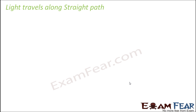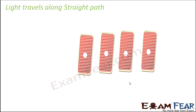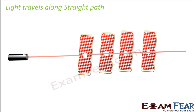We will perform another experiment to clearly demonstrate that light travels in a straight path. Take some playing cards, make holes at the center of each, and then use a laser light — available at stationery shops or your school lab. The laser produces a thin, narrow, intense beam of light. Place the cards so that all the holes are aligned along a straight line. You will clearly see the laser passing through all the holes and appearing on a screen on the other side.